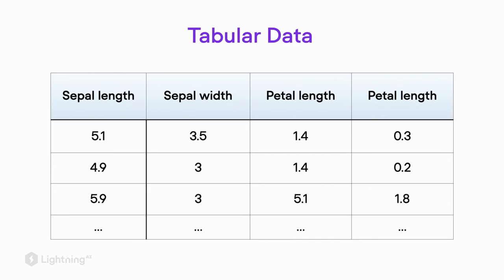In all the previous units, we worked with tabular data. Just for reference, tabular data is data where we have the training examples organized as rows and the features organized as columns. Here you see a snapshot of the iris dataset, where we have four different flower features.